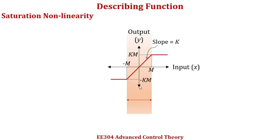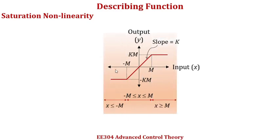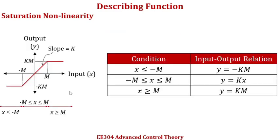In the middle part, where the input varies from minus m to m, you have a straight line. For the part on the left side, where x is less than or equal to minus m, you have a straight line parallel to the x-axis. And when x is greater than or equal to m, you have a straight line parallel to the x-axis as well. So there are three ranges of x values with corresponding input-output relationships.